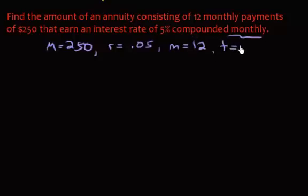Now, t, sometimes they'll tell you and sometimes you have to kind of work it out. But if you're making 12 monthly payments, how many years have passed? Well, 1. So t is 1.